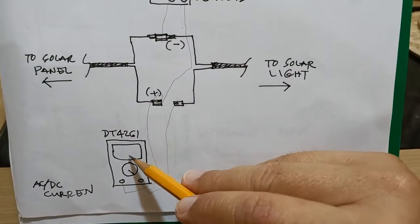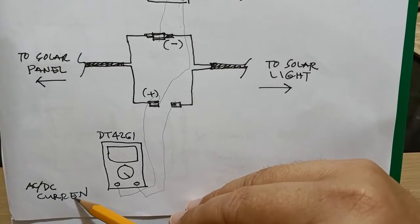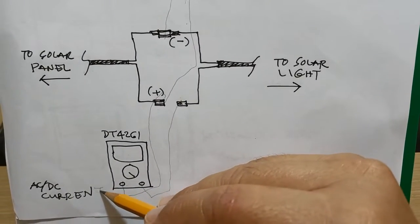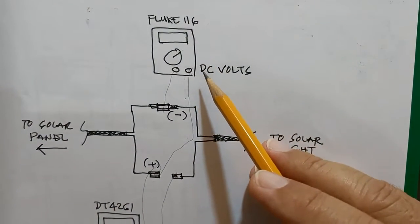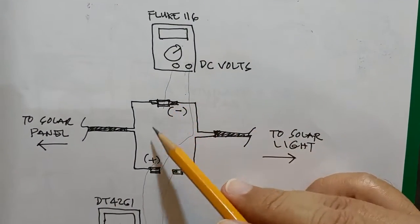So the DT4061 set to measure AC DC current will be connected in series while the Fluke 116 set to measure DC voltage will be connected in parallel.